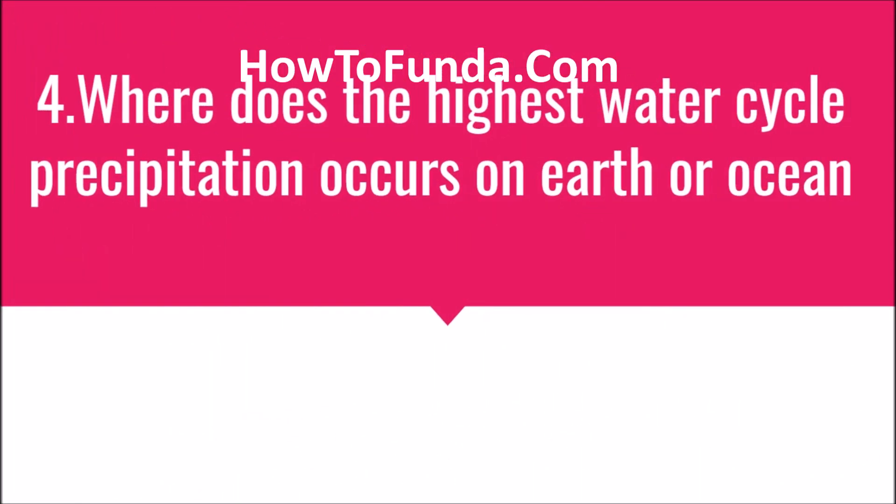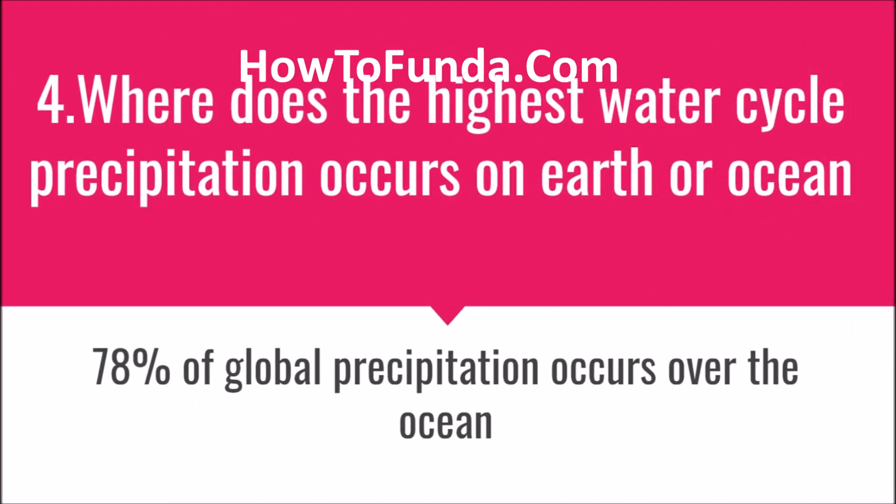Where does the highest water cycle precipitation occur — on the earth or in the ocean? The highest water cycle precipitation happens over the ocean. There are 78 percent of global precipitation that occurs over the ocean, and the remaining 22 percent happens in other parts of the earth.